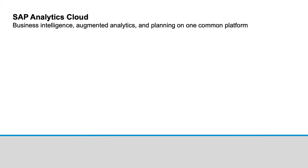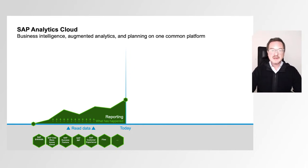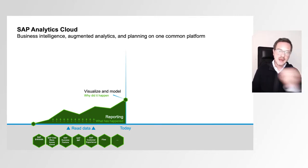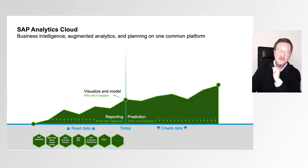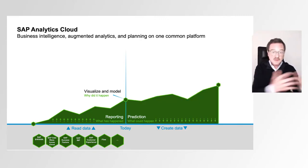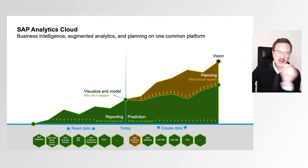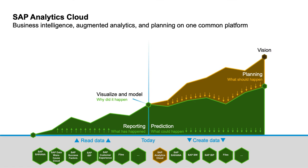Why is it so important to have all three capabilities combined in one solution? With the BI capabilities in SAP Analytics Cloud, we can look into the past and answer: what has happened? With modeling and smart features, we can also answer why did this happen? But we want to look into the future. We can use predictive capabilities to project facts into the future — what could happen? Where would we end up? But there is still a piece missing. We need planning to answer what should happen in the future, and finally how can we reach our company's vision and goals?